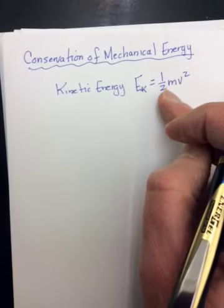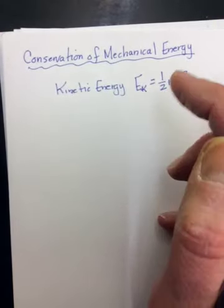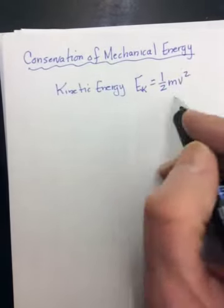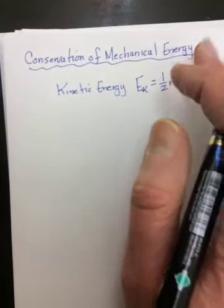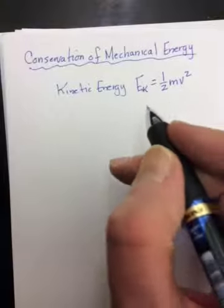So whenever an object is in motion, it's going to have kinetic energy. It's just its velocity squared multiplied by the mass. Energy, of course, is a scalar. So we don't have to worry about direction. And energy is measured in joules.